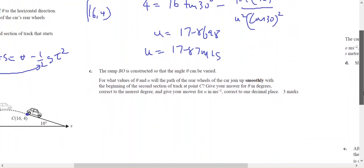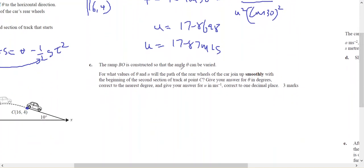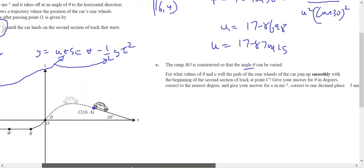In part c, the ramp is constructed so that the angle theta can be varied. So this is the ramp here. What are the values of theta and u so that it's a smooth join?